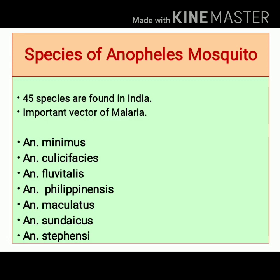There are about 45 species of Anopheles mosquito found in India. Out of these 45 species, only a few are involved in transmission of malaria. These species include Anopheles minimus, Anopheles culicifacies, Anopheles fluviatilis, Anopheles philippinensis, Anopheles maculatus, Anopheles sundaicus, and Anopheles stephensi. Out of these, Anopheles culicifacies is the important vector in rural parts of India, and Anopheles stephensi is the important vector in urban parts of India.